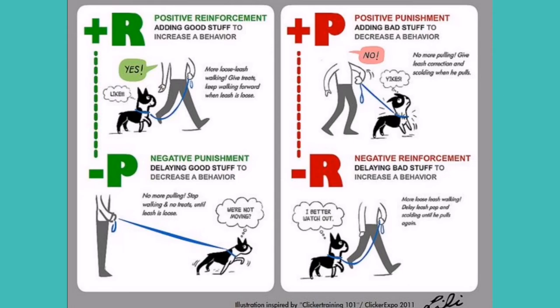Negative punishment is removing something as a result of a bad action. With children, an example would be taking away their access to a TV or phone if they are naughty, or grounding them. With rabbits, if they start chewing on something they shouldn't, you remove the item.